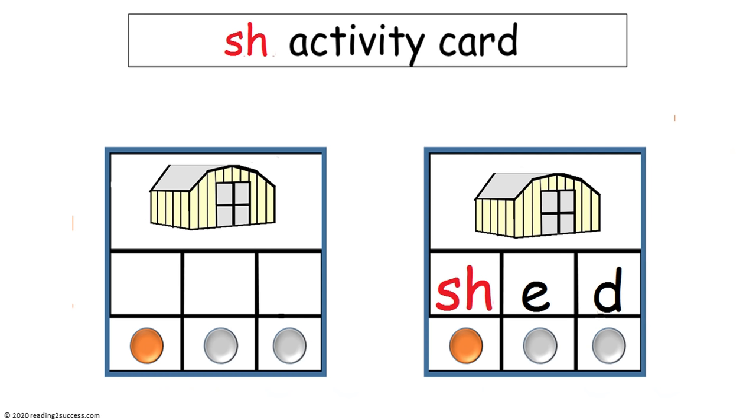The SH activity card follows the same procedure that we did in the CH activity card. Have kids write the letter or letters that represent the sounds heard in each word, and then have them put their finger on the circle for each sound, say each sound, and then blend the sounds together. And in this example, the sounds would be sh-e-d, and blended together would be shed.